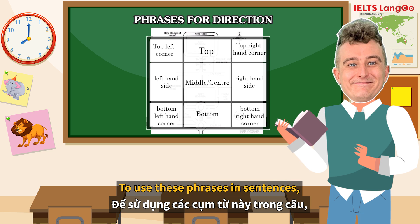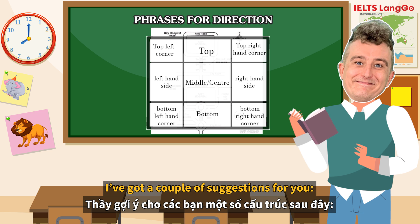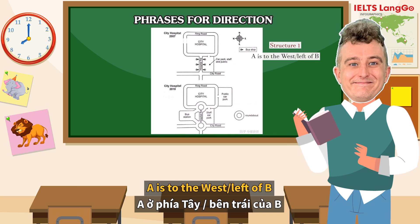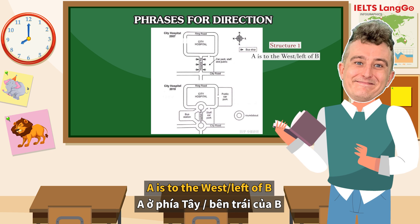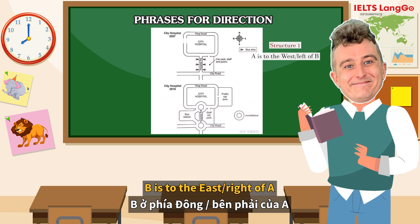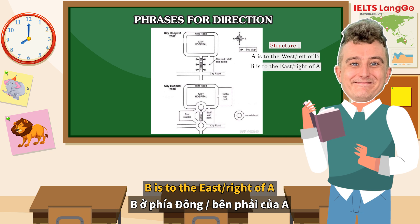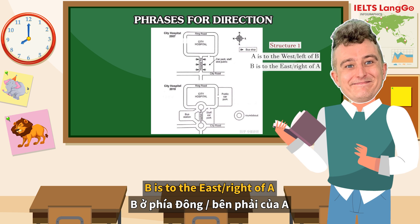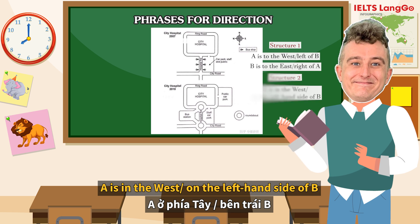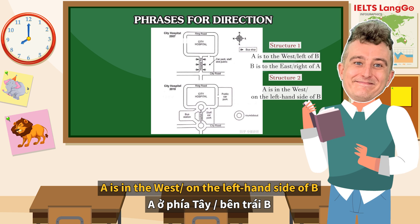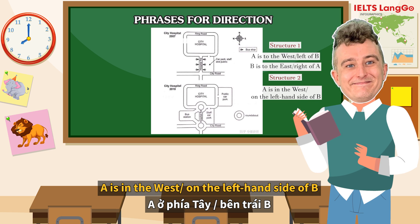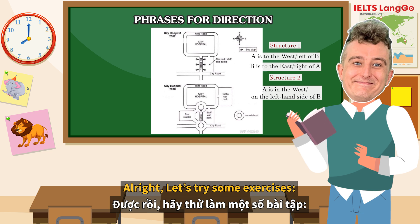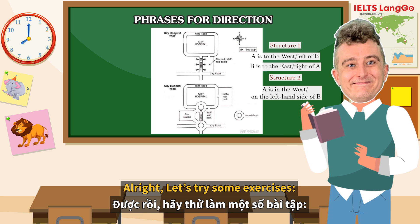To use these phrases in sentences, here are a couple of suggestions. A is to the west, or to the left of B. B is to the east, or to the right of A. A is in the west. A is on the left hand side of B. Alright, let's try some exercises.